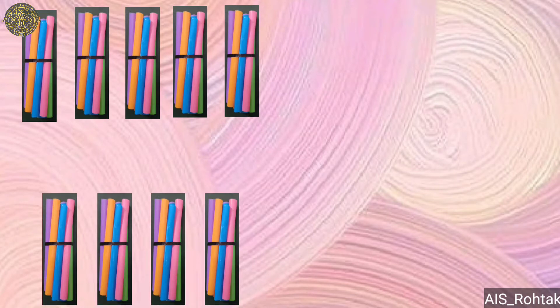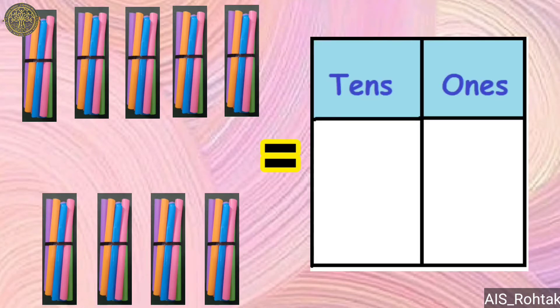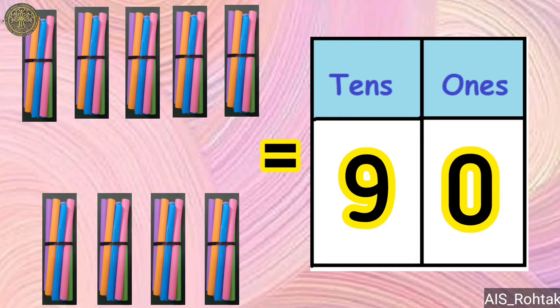When we put nine such bundles of sticks together, that is equal to nine tens and zero ones. That makes the number 90.